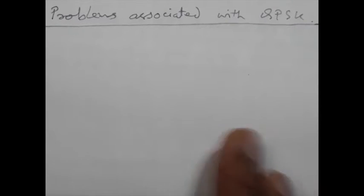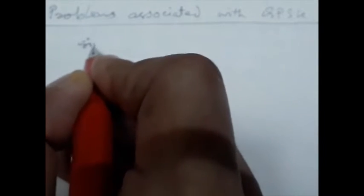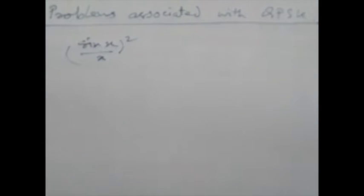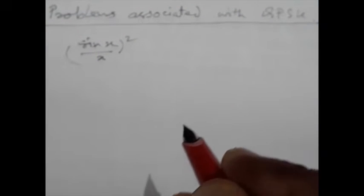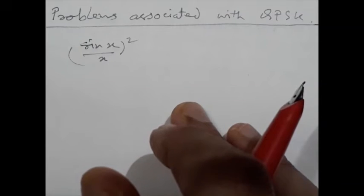Now, the rectangular shaped data produces sin x by x square type of power spectrum for the QPSK signal that has large undesirable spectral side lobes.